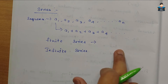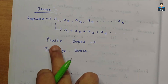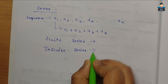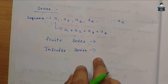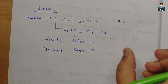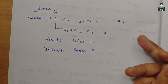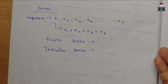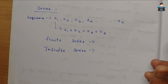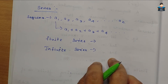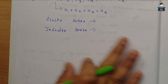A finite series has a finite number of terms — we know the last term in that particular series. An infinite series has an infinite number of terms — it goes on and we do not know the end part.